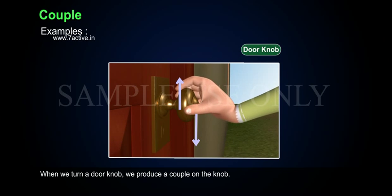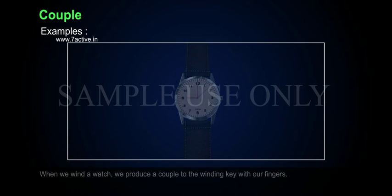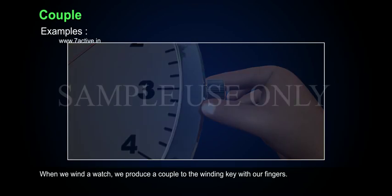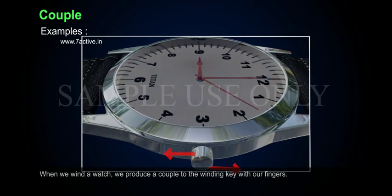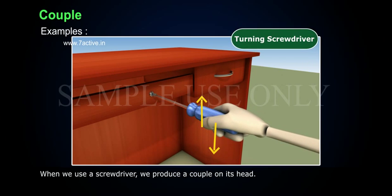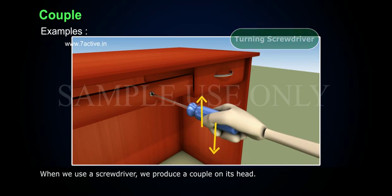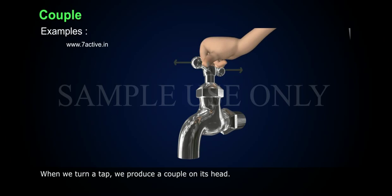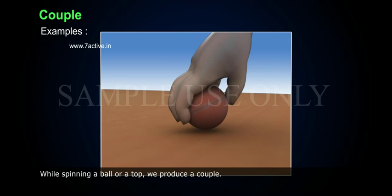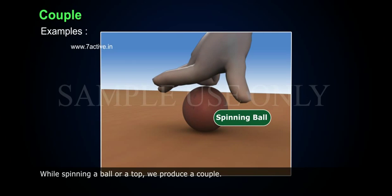Examples of a couple: When we turn a door knob, we produce a couple on the knob. When we wind a watch, we produce a couple on the winding key with our fingers. When we use a screwdriver, we produce a couple on its head. When we turn a top, we produce a couple on its head.